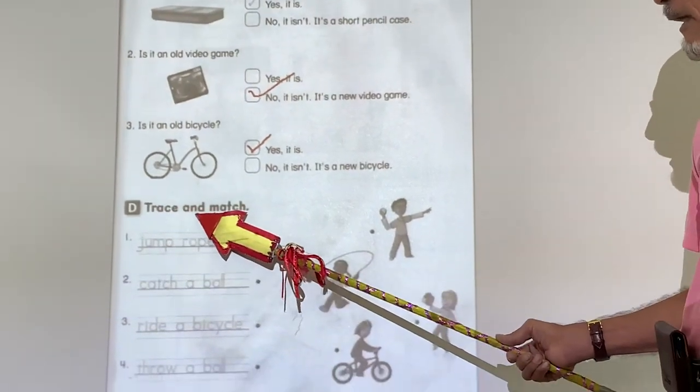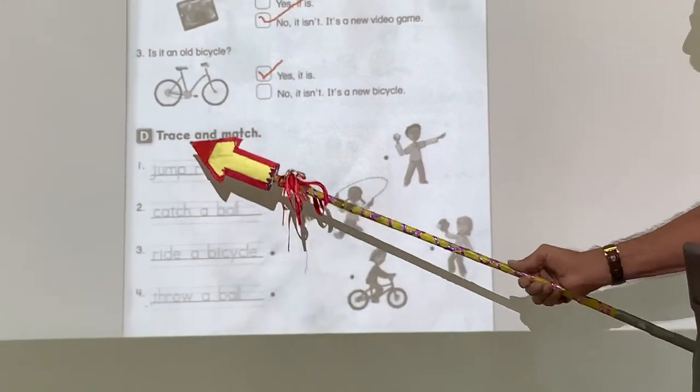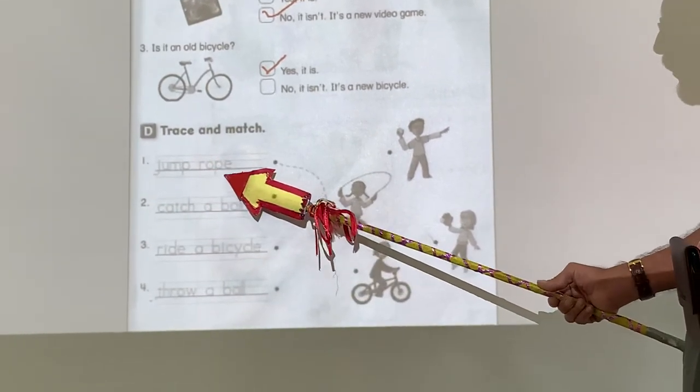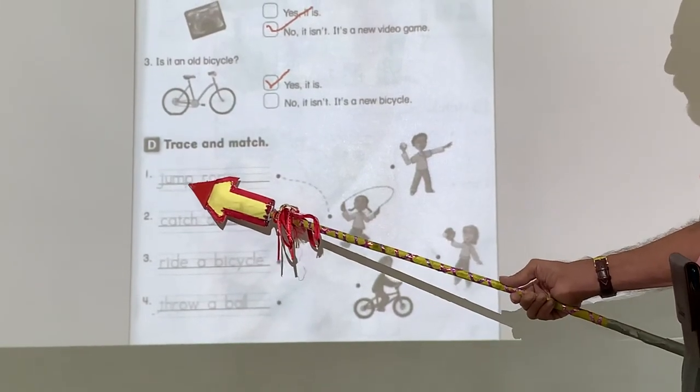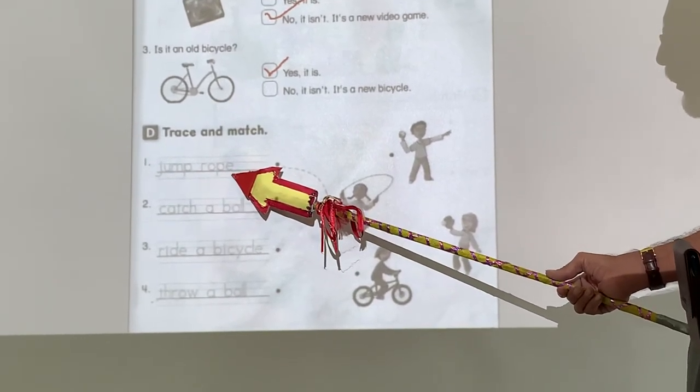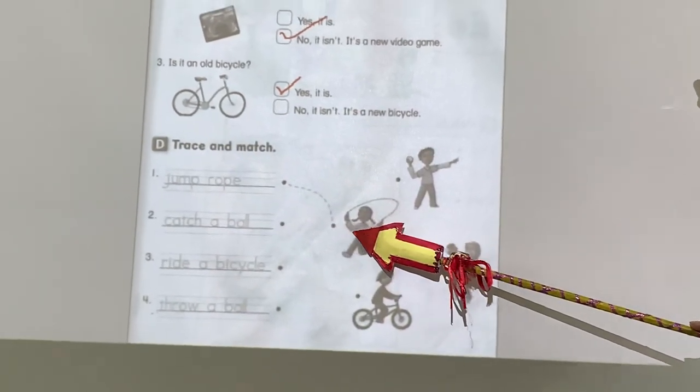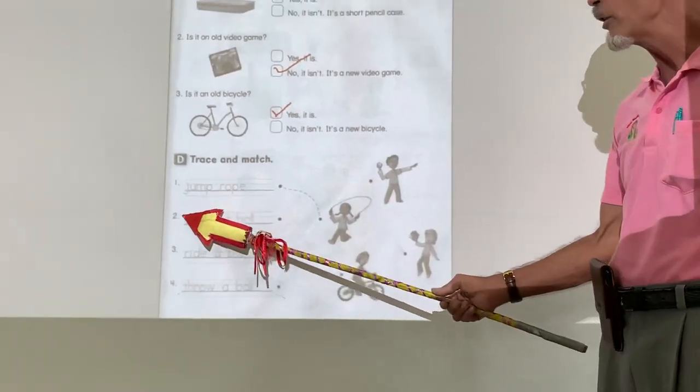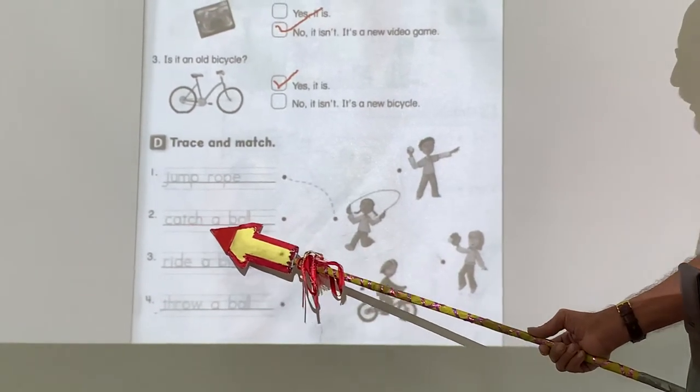Now, this down here says trace and match. Trace and match. Remember, on page 42, we talked about a jump rope. Jump rope. J-U-M-P-R-O-P-E. So, you draw a line to the jump rope. Like they did here. This is a jump rope. Number two. Catch a ball.